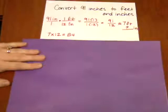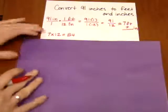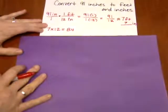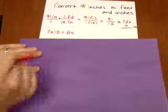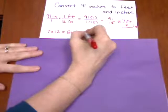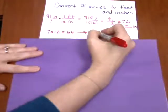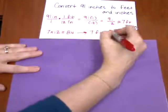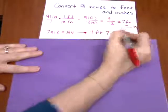Well, what that means is I have 84 inches and the problem originally started with 91 inches. So that means I have 7 more inches to account for. So it turns out that 91 inches is the same thing as 7 feet and 7 inches.